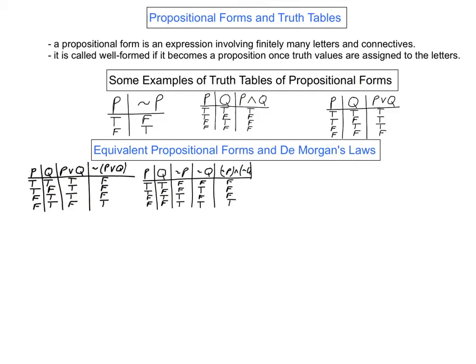To get the truth table for the conjunction of the negations of P and Q, we first get the table for the negations of P and Q, and then we take the conjunction of those two. Notice that the last columns of these two tables are identical, and so these last columns represent equivalent propositional forms. We write this in the following way to indicate equivalence. This is called DeMorgan's Law — it's one of the two DeMorgan's Laws.